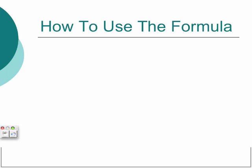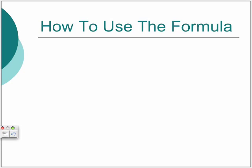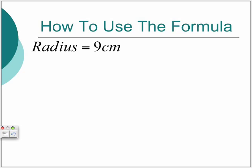I'll show you how to use the formula with an example. You just write down the formula, then you fill it in. So pi is 3.14 and the radius is 9.